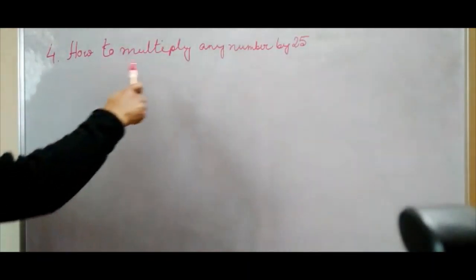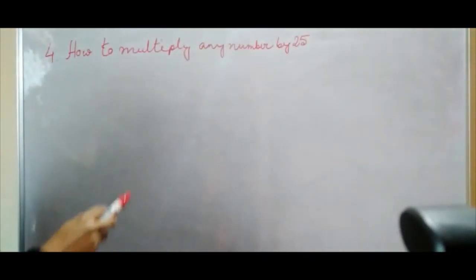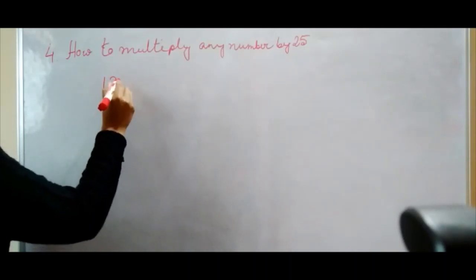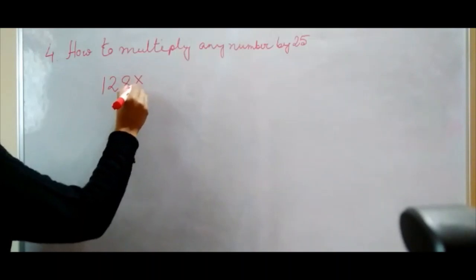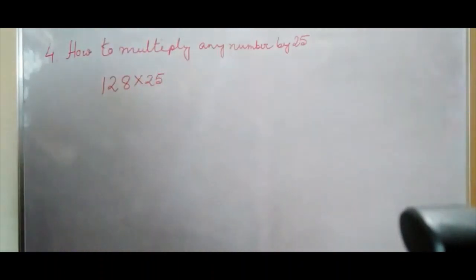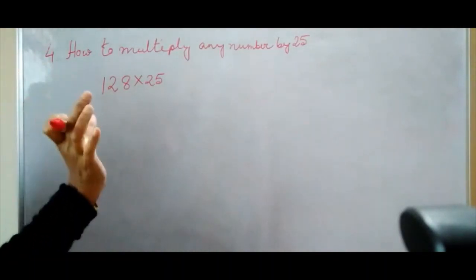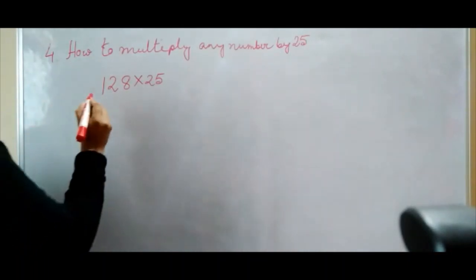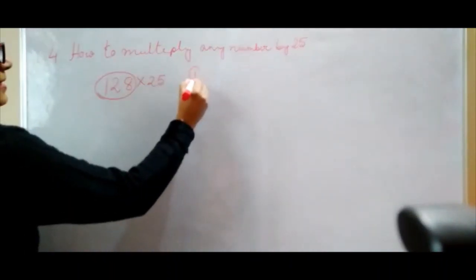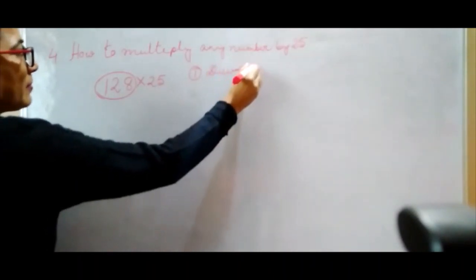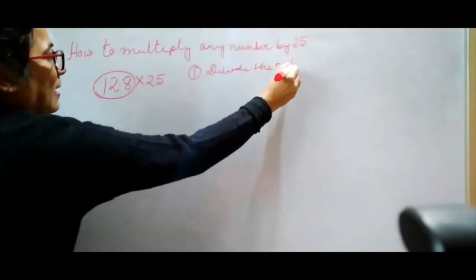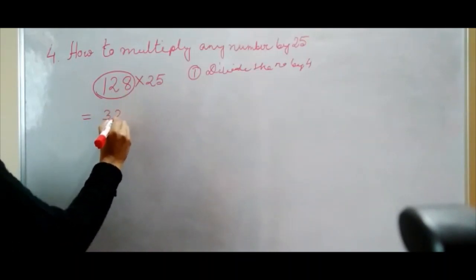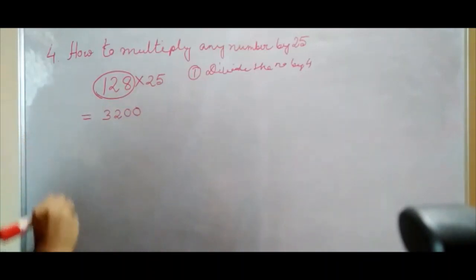Trick number 4: how to multiply any number by 25. Take 128 × 25. As you know, there are four 25s in 100 because 25 × 4 = 100. So first divide the number by 4: 128 ÷ 4 = 32. Then put two zeros after it: 3200. That is the answer. Next, 256 × 25: divide by 4 — 256 ÷ 4 = 64. Put two zeros: 6400.